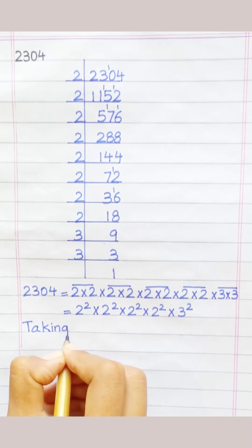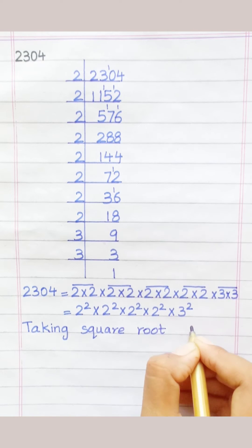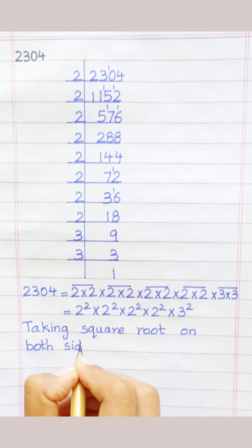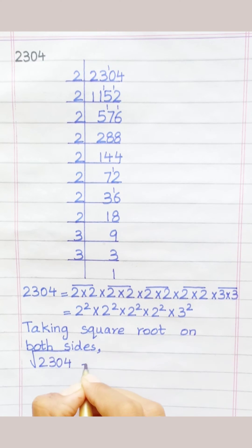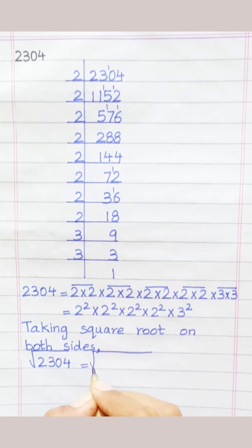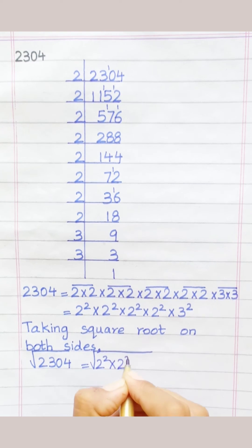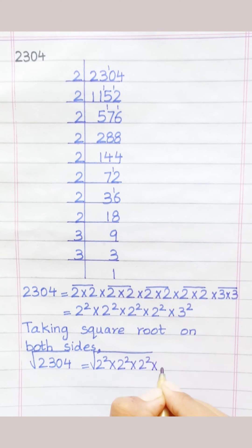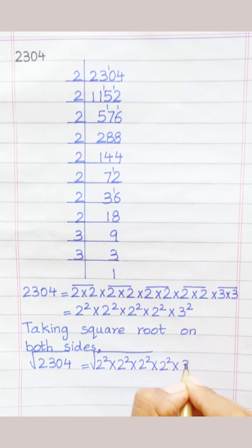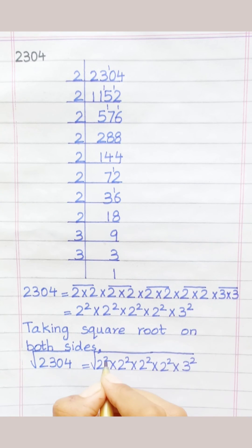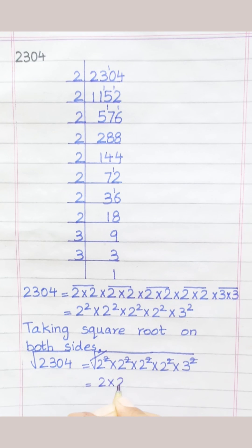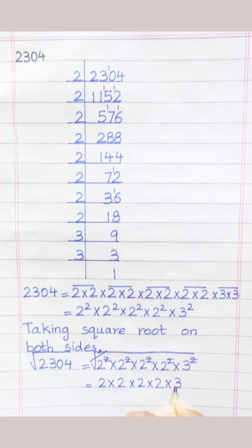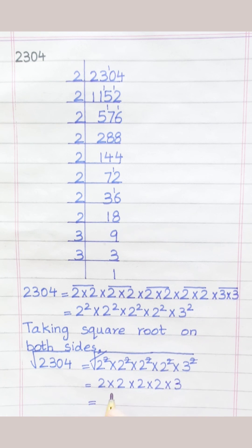Taking square root on both sides: square root of 2304 equals square root of 2² × 2² × 2² × 2² × 3², which equals 2 × 2 × 2 × 2 × 3 = 48.